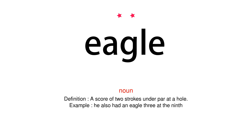Noun. Definition: A score of two strokes under par at a hole. Example: He also had an eagle three at the ninth.